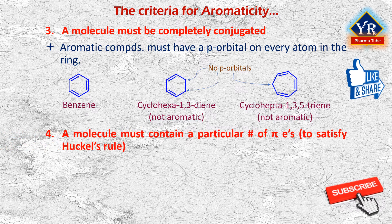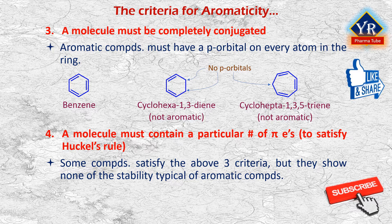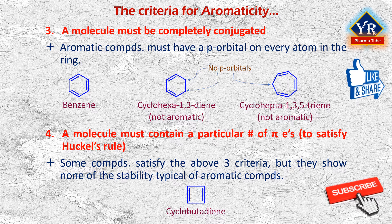Number four: a molecule must satisfy Hückel's rule and contain a particular number of pi electrons. Some compounds satisfy the above three criteria for aromaticity but still show none of the stability typical of aromatic compounds. For example, cyclobutadiene is so highly reactive that it can only be prepared at extremely low temperatures. Therefore, in addition to being cyclic, planar, and completely conjugated, a compound needs a particular number of pi electrons to be aromatic.